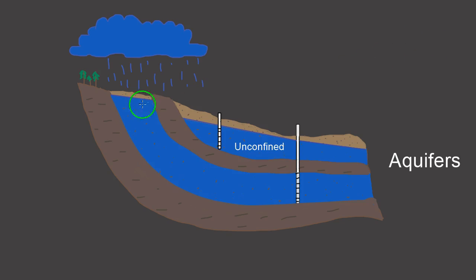So in this example let's start with an unconfined aquifer. Let's say this rock type up here is a sandstone. Sandstones can transmit water fairly decently. They make pretty good aquifers.